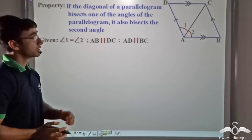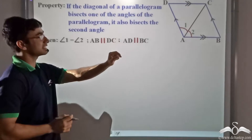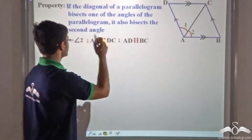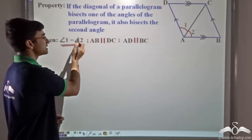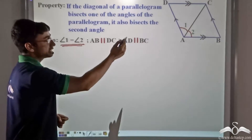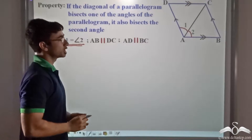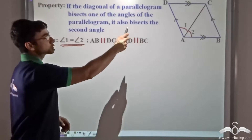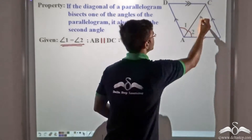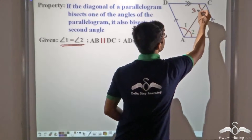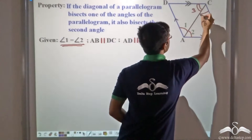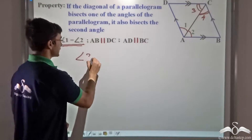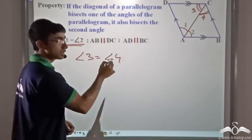We have been given that AC bisects angle A, so we can write angle 1 is equal to angle 2. We have also been given that ABCD is a parallelogram, meaning AB is parallel to DC and AD is parallel to BC. We have to prove that angle 3 is equal to angle 4.